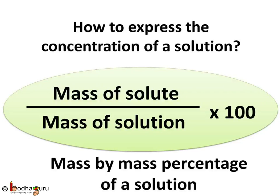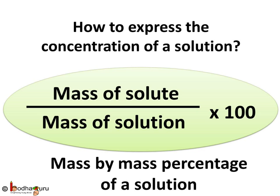So to sum up: how do we express the concentration of a solution? It can be expressed as mass by mass percentage, W/W, which is mass of solute divided by mass of solution multiplied by 100. Or it can be expressed as mass by volume percentage, W/V, which is mass of solute divided by volume of solution multiplied by 100. So that was all for now. Bye bye.